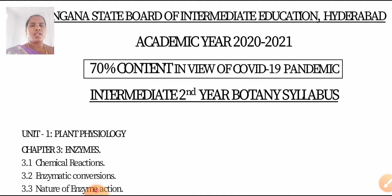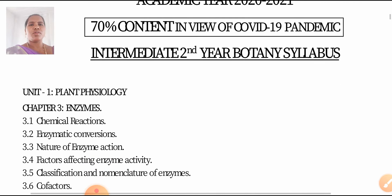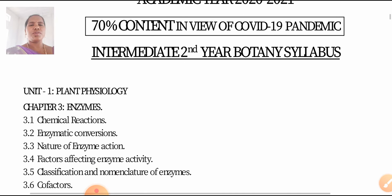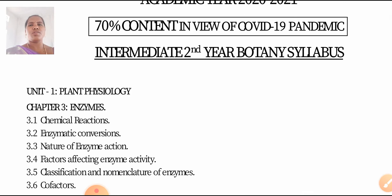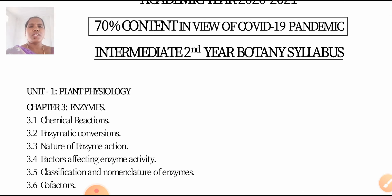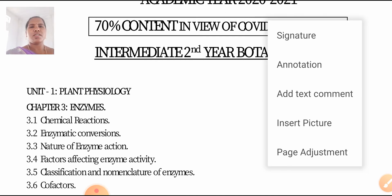Let us move on to the topic. Unit 1 is Plant Physiology. Chapter 3 is Enzymes — covering chemical reactions, enzymatic conversions.